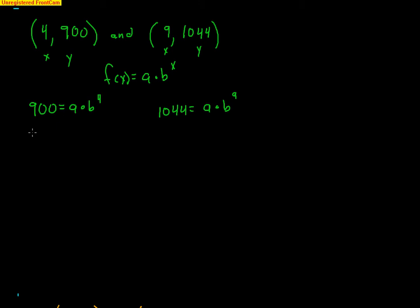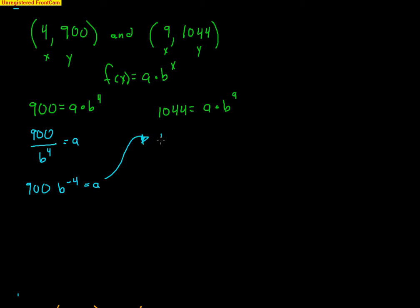First, solve for A from the first equation: A = 900 divided by B to the 4th, which I'll write as 900 times B to the negative 4. Now substitute that into the second equation: 1044 = 900 times B to the negative 4, times B to the 9th. I just replaced A with what I solved for.